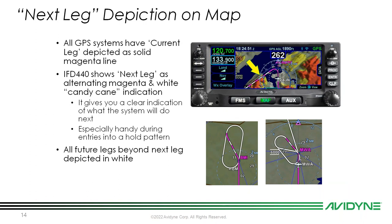We have a next leg depiction on the map. The current leg is magenta; the next leg is a magenta-and-white candy cane indication so you know what's coming up. Any future leg beyond that is depicted in white. This is really handy when doing holds — the candy cane turns solid magenta as you cross the waypoint, and the following leg takes on the candy cane pattern. It works progressively as you move through your flight plan.